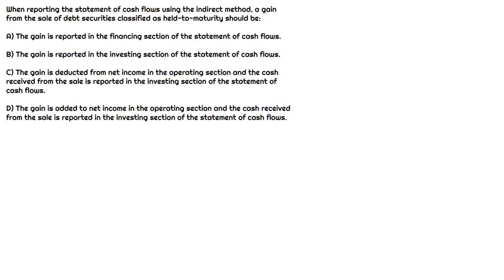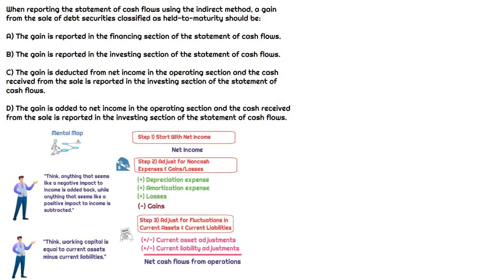In this question, we're told that we're using the indirect method, and we need to figure out how we would report a gain from the sale of debt securities classified as held to maturity. With the indirect method, we have to remember that in the operating section, our starting point is net income.